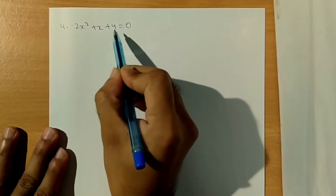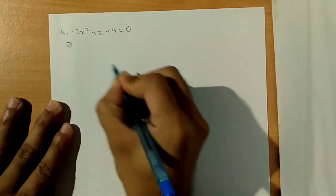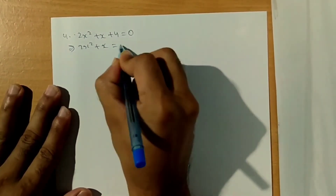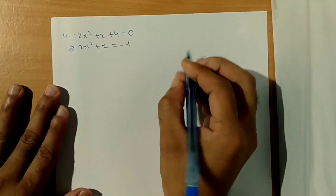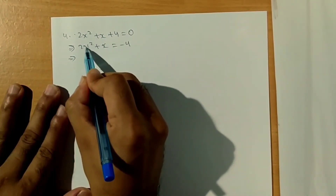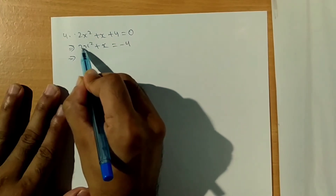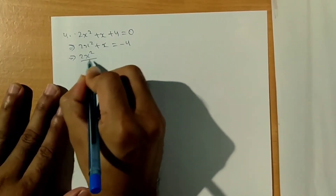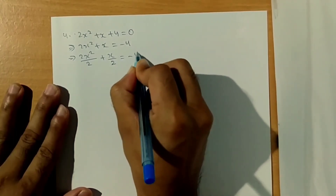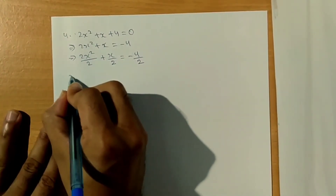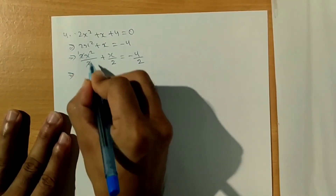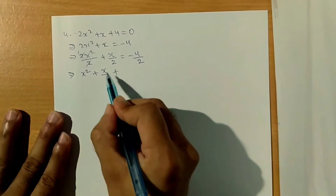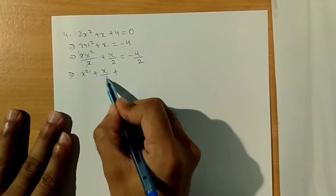Question number 4: 2x squared plus x plus 4 is equal to zero. Now this implies 2x squared plus x on the left side, equal to minus 4. Dividing by 2: 2x squared divided by 2 plus x by 2 equals minus 4 by 2. So x squared plus x by 2 equals minus 2. The coefficient of x is one by two.